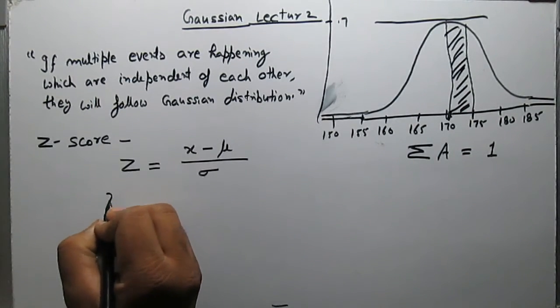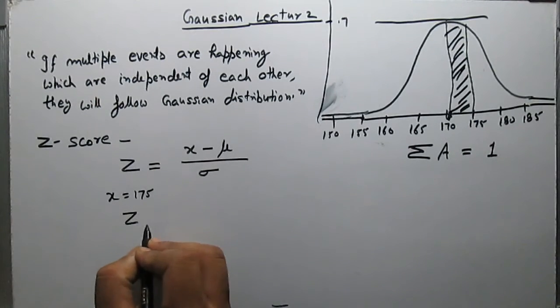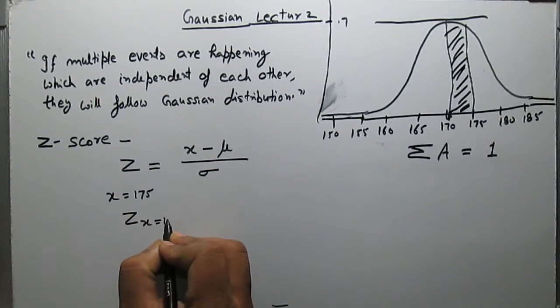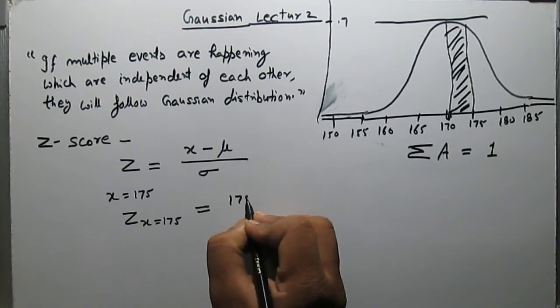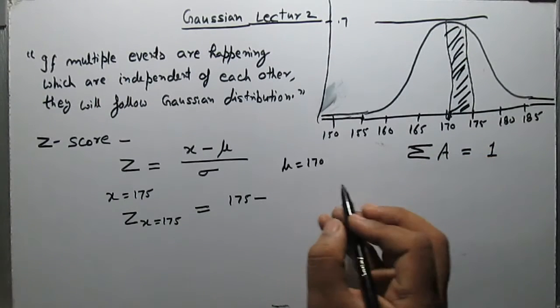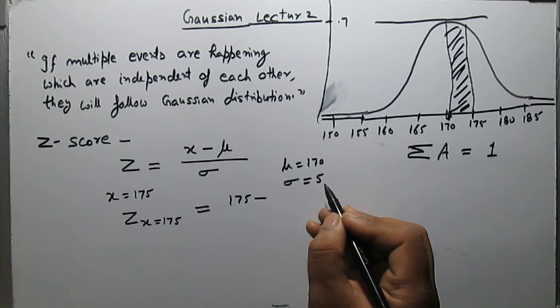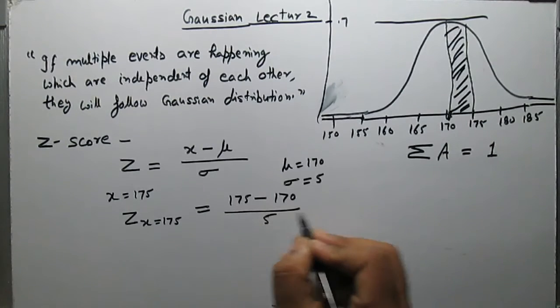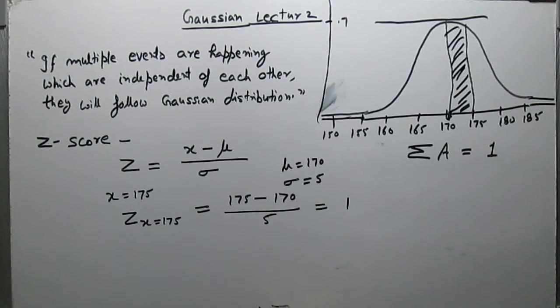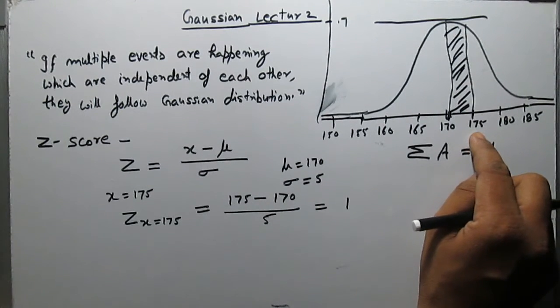Let's take an example. If the value of x is 175, we want to know the z-score for x. This will be equal to 175 minus mu. Mu is suppose 170 and sigma is 5. Now 175 minus 170 divided by 5 equals 1. What does it mean? It means that the value x which is equal to 175 is one standard deviation away from the mean.